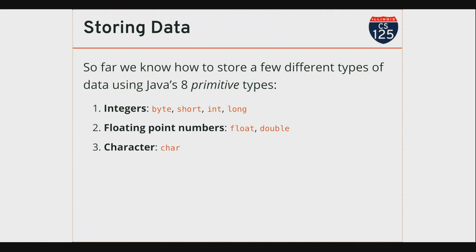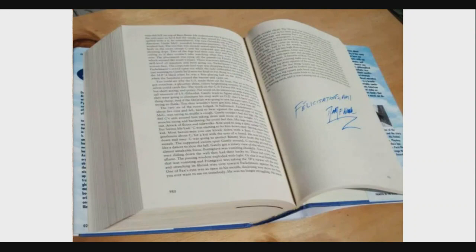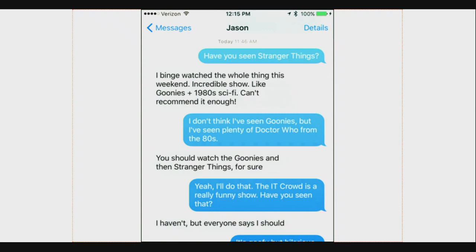Now we can use one integer or one floating point number, but that's not very interesting. There's not much in the world you can accurately describe with a single number. So we expanded to being able to work with entire sequences — lists and arrays of these types. Up until now we've been working mainly with numbers, but text is a really important component of the world around us. Text is such an important type of data that Java makes some exceptions for it.